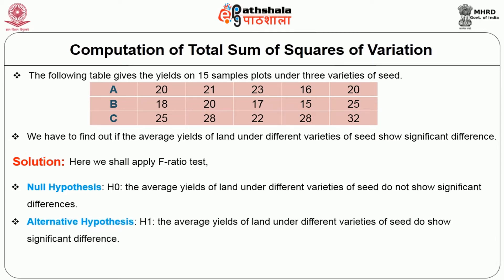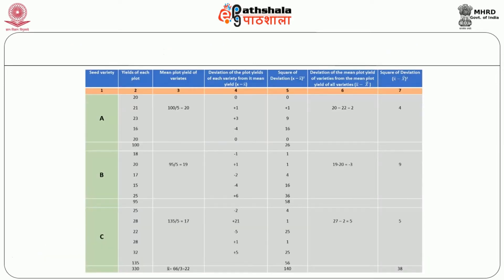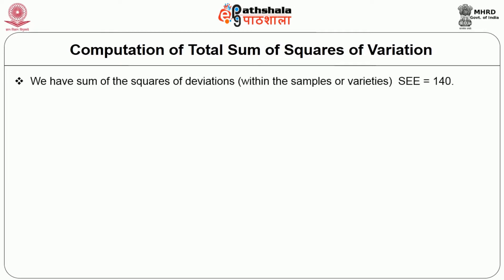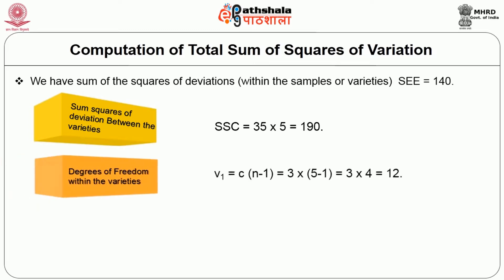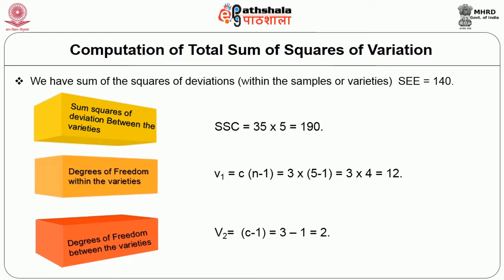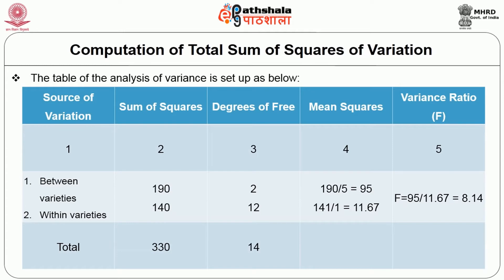Alternate hypothesis H₁: the average yields of land under different varieties of seeds do show significant difference. Test statistic: under H₀, F = variance between samples ÷ variance within samples. From the above table, the sum of squares of deviations between the samples or varieties equals 140. Sum of squares of deviations between the varieties = 35 × 5 = 190. Degrees of freedom within = 3 × (n − 1) = 3 × 4 = 12. Degrees of freedom between the varieties = 3 − 1 = 2. With the help of the above data, the analysis of variance table is constructed.